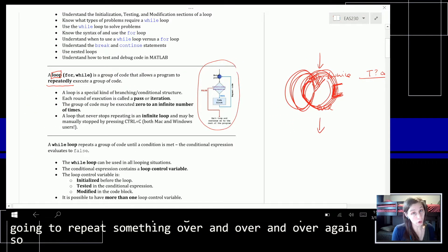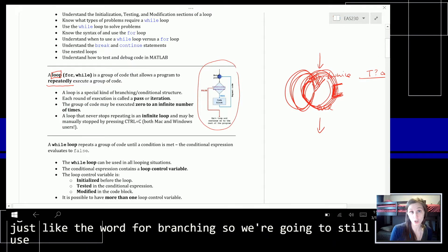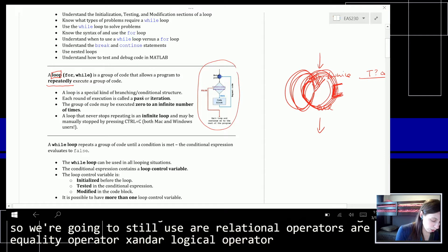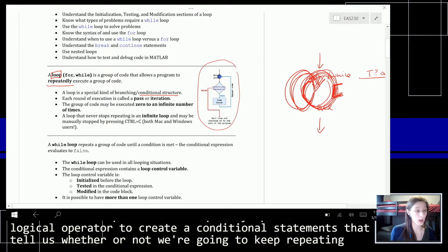So like I said, there are conditional statements just like there were for branching. So we're going to still use our relational operators, our equality operators, and our logical operators to create our conditional statements that tell us whether or not we're going to keep repeating or stop.